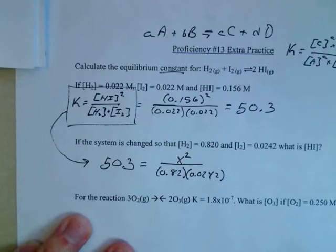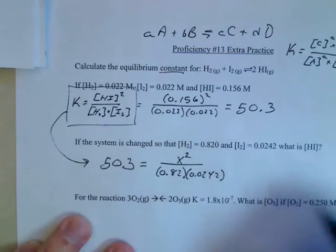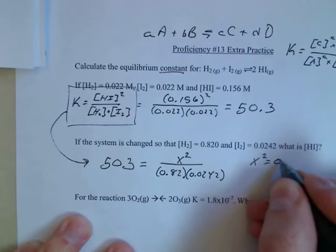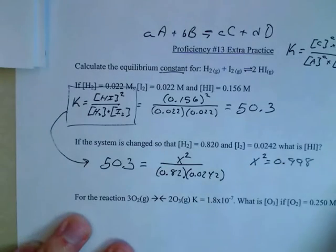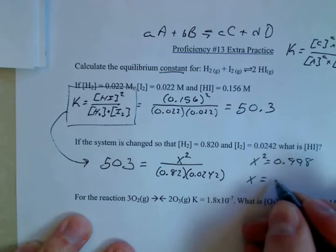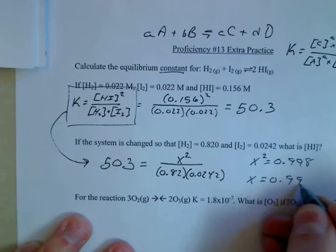So you do all this math. Multiply these together, multiply both sides. You're going to get X squared equals 0.998. So then, of course, you take the square root of both sides and X is going to equal pretty much 1.